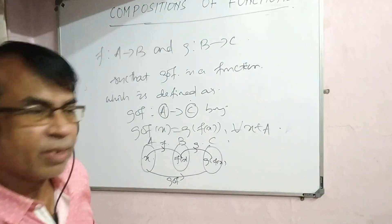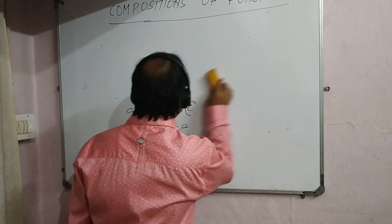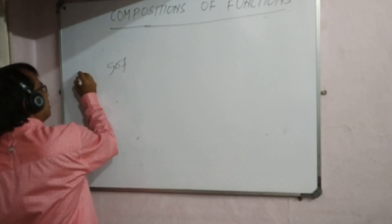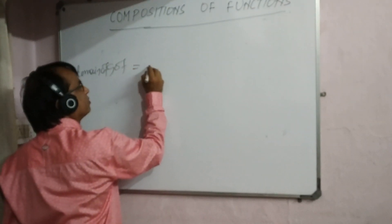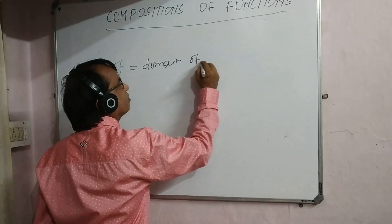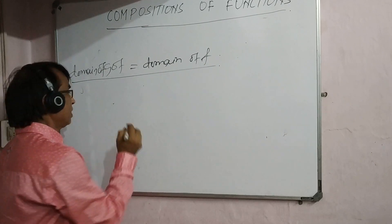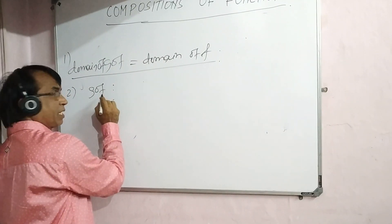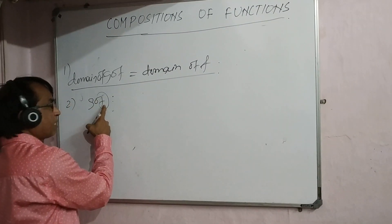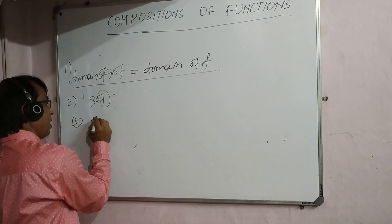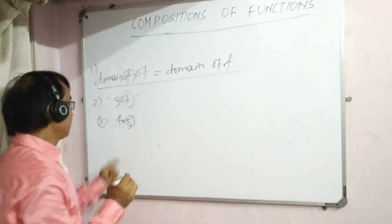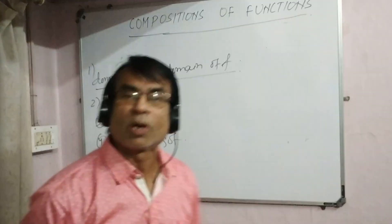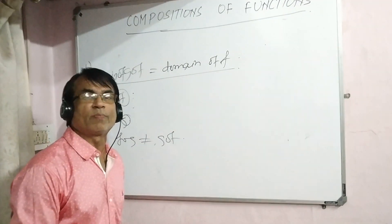A composition function is the combination of two functions — it is a function whose domain is A and codomain is C. Now for gof and fog: the domain of gof is equal to the domain of f. In gof, the f rule is applied first, then the g rule. In fog, the g rule is applied first, then the f rule.